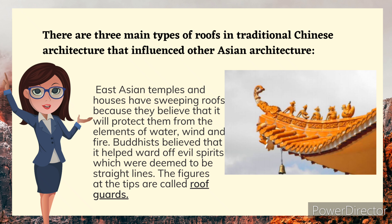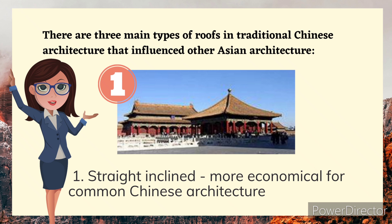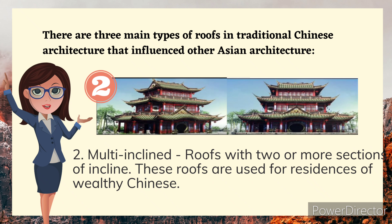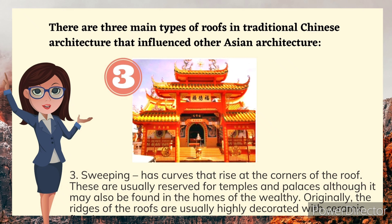East Asian temples and houses have sweeping roofs because they believe it will protect them from the elements of water, wind, and fire. Buddhists believed that it helped ward off evil spirits, which were deemed to travel in straight lines. The figures at the tips are called roof guards. There are three main types of roofs in traditional Chinese architecture: 1) Straight inclined — more economical, for common Chinese architecture. 2) Multi-inclined — roofs with two or more sections of incline, used for residences of wealthy Chinese. 3) Sweeping — with curves that rise at the corners, usually reserved for temples and palaces. Originally, the ridges of the roofs are usually highly decorated with ceramic figurines.